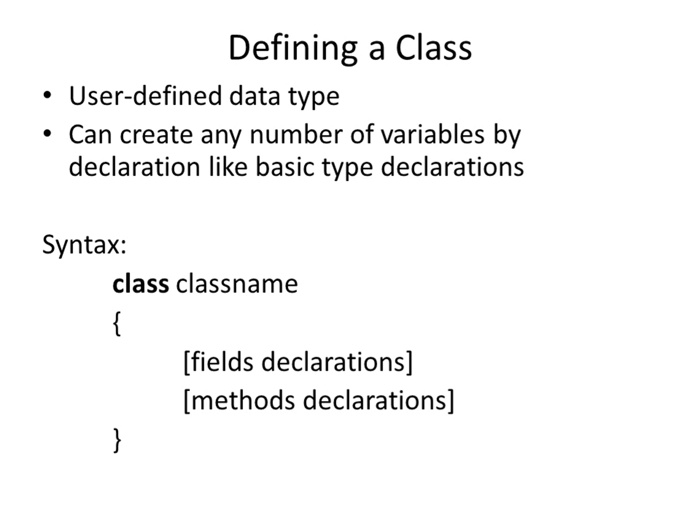Once you have created a class, you can create any number of instances of that particular class. Just as you can declare a variable 'a' as integer and also declare b, c, and so on as integer, once you have created a class it is possible to create any number of instances, which you will call objects. You can create any number of objects and access the class through them.